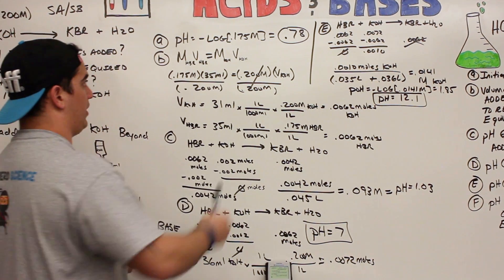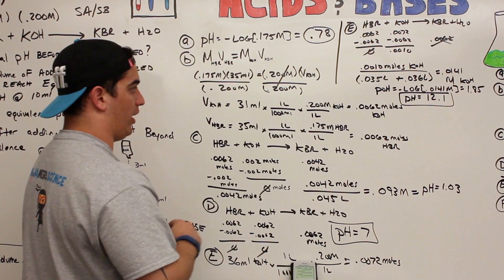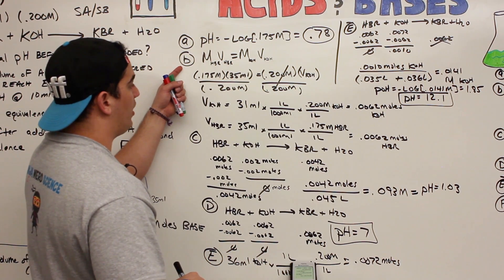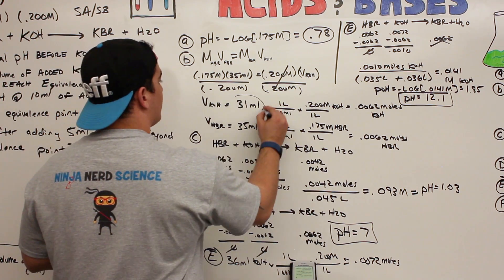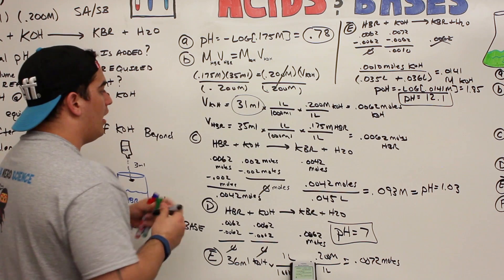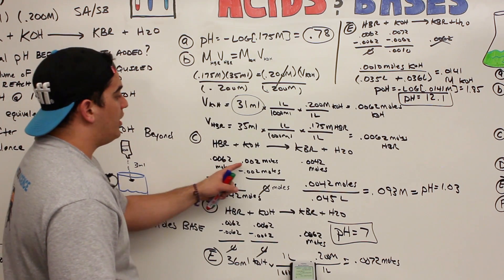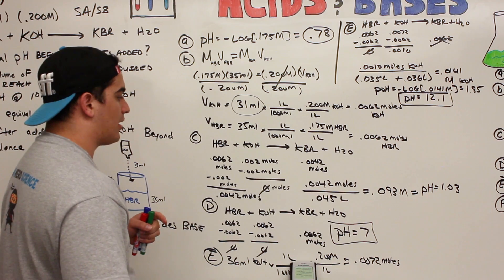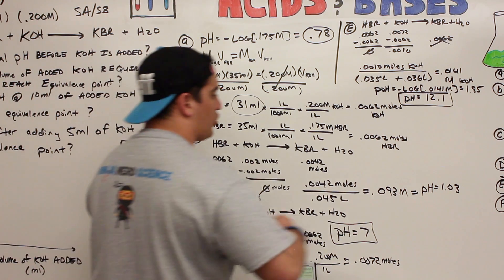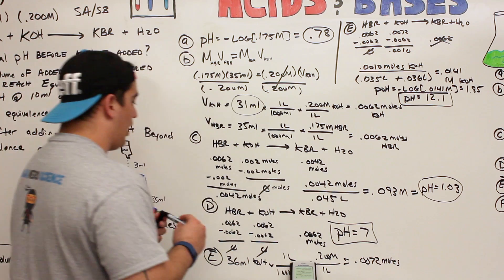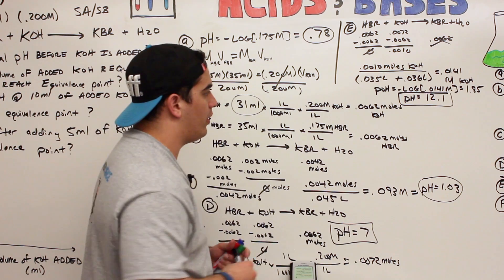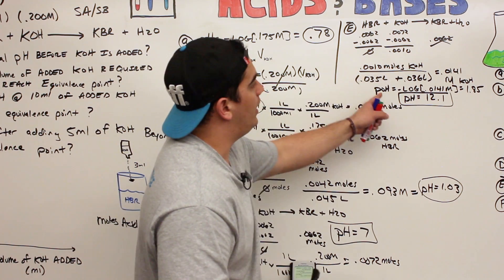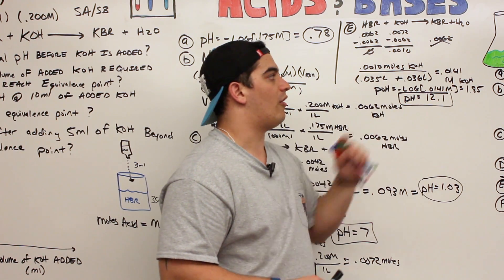To summarize: Part A gave an initial pH of 0.78. Part B determined that 31 mL of KOH is needed to reach the equivalence point. Part C gave a pH of 1.03 when 10 mL of KOH was added. Part D showed the equivalence point pH is always 7 for a strong acid/strong base titration. Part E gave a pH of 12.1 after adding 5 mL beyond the equivalence point.